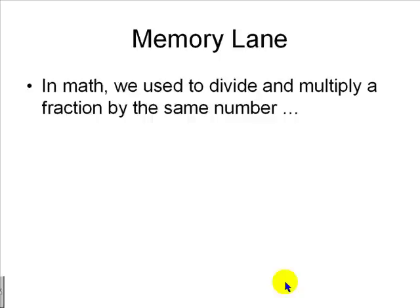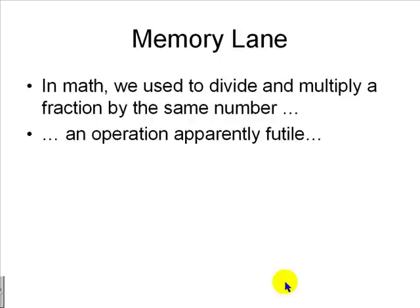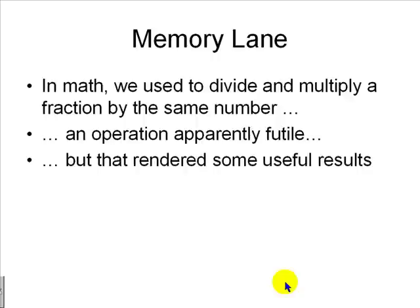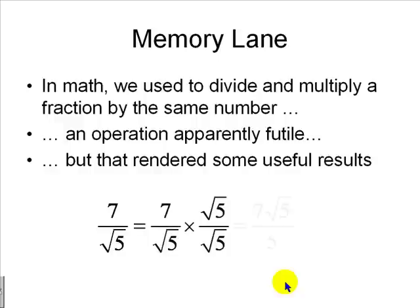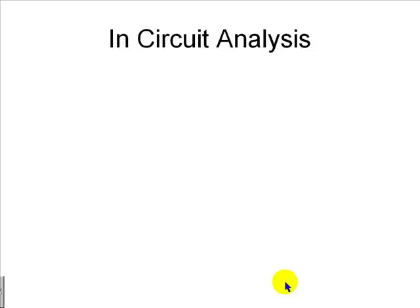In mathematics, we used to divide and multiply a fraction by the same number, which was an operation apparently futile. However, that operation apparently futile produced some useful results, like multiplying seven over root five and divide at the same time by root five. That produced a number with no square roots in the denominator. In circuit analysis, we do something similar.